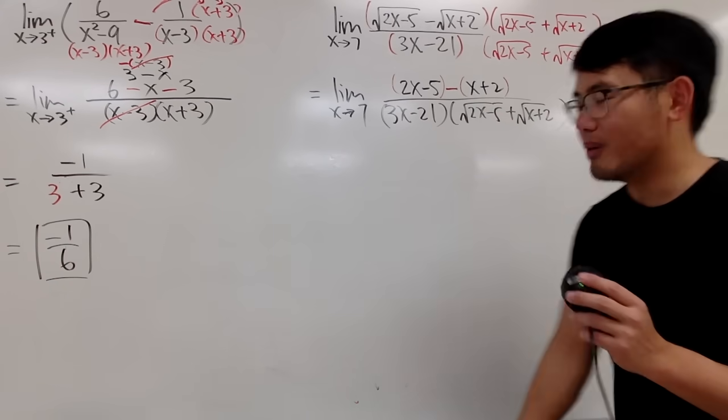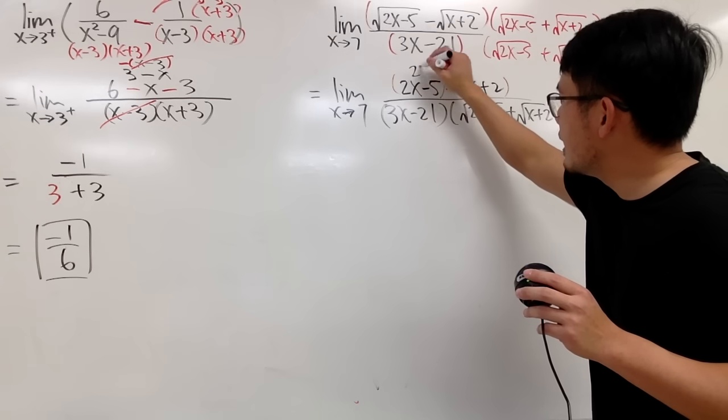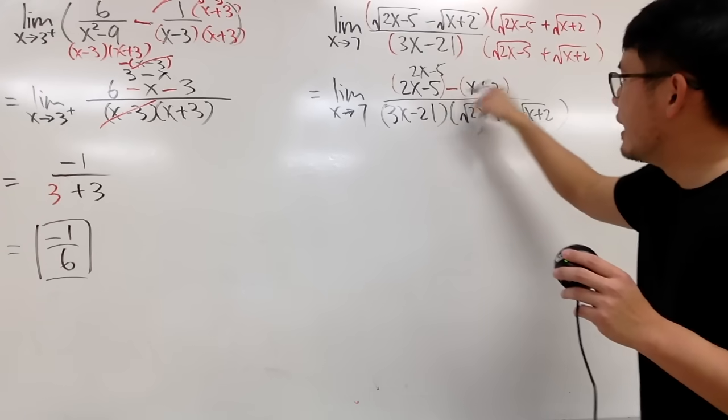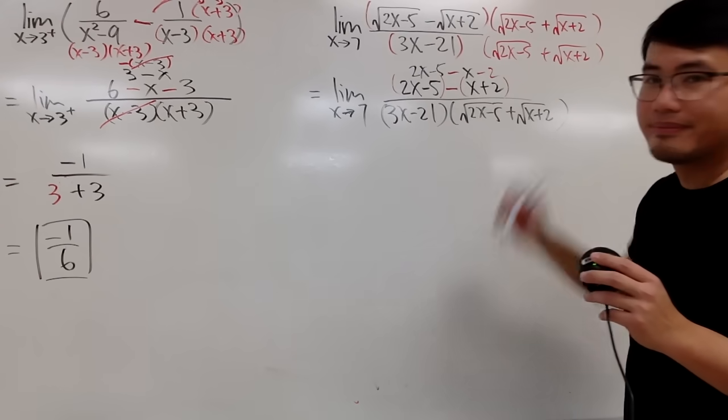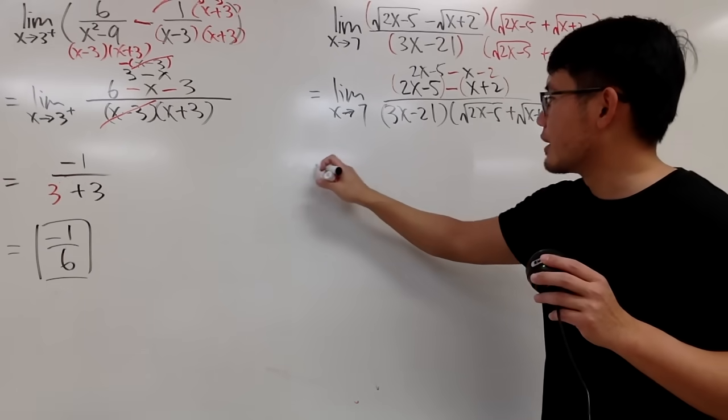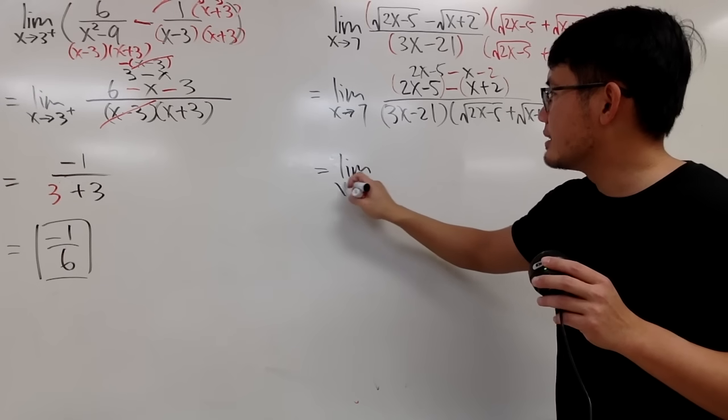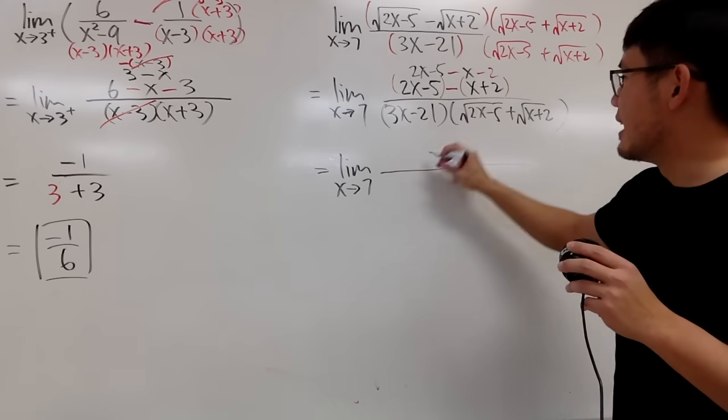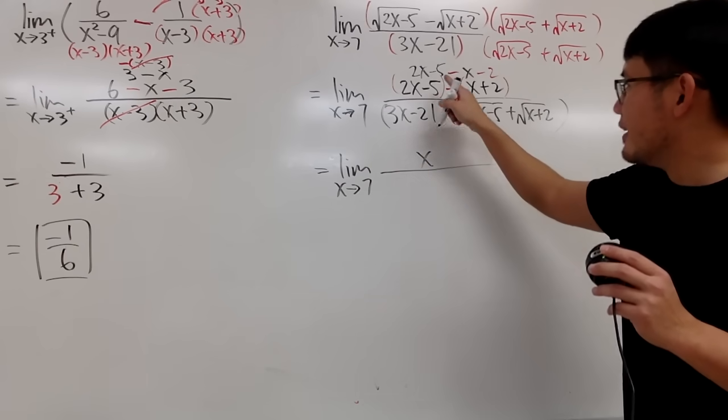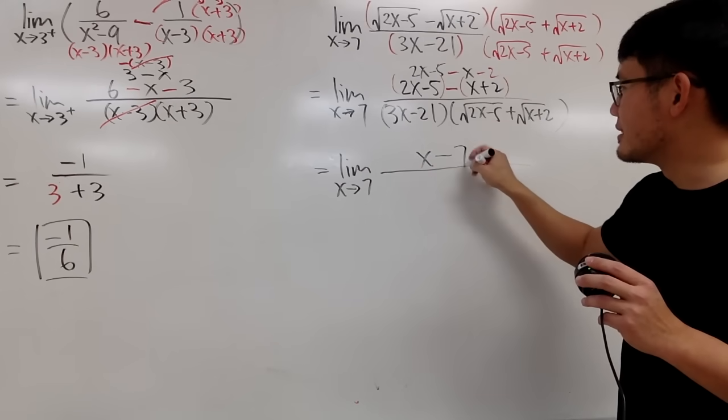On the top, let's do more. Because right here, this is 2x minus 5. And then we get minus x and then minus 2. And let me just put down the result right here. This is the limit as x approaching 7. On the top, 2x minus x is just x. And then, negative 5 minus 2 is minus 7.